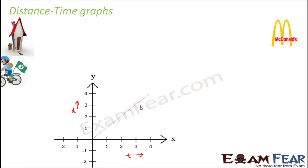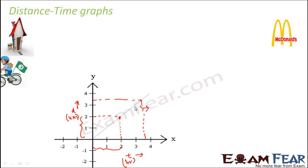If the graph is a straight line, with time in hours and distance in kilometres, then any point on this line tells us the distance travelled in a particular time. For example, one point tells us that in two hours, the object travelled two kilometres. Similarly, another point tells us that in 3.5 hours, the object travelled 3.5 kilometres. So any point on the line gives you information about the distance travelled in a particular duration of time.